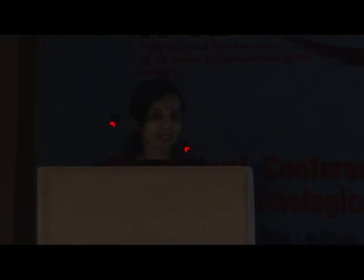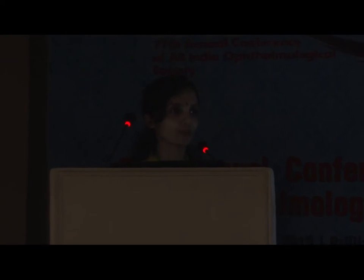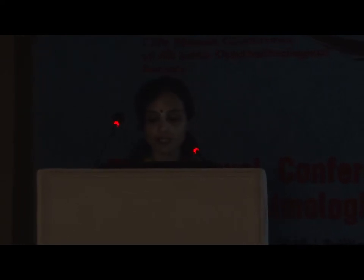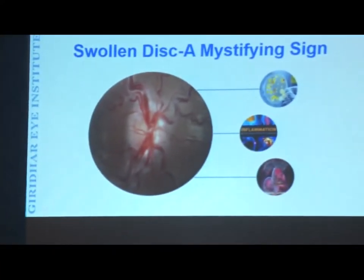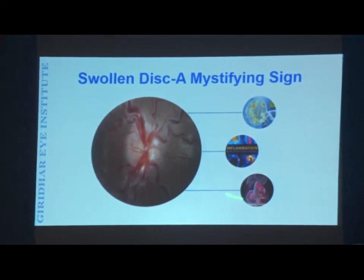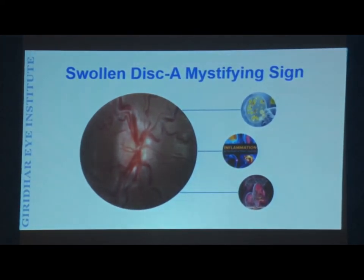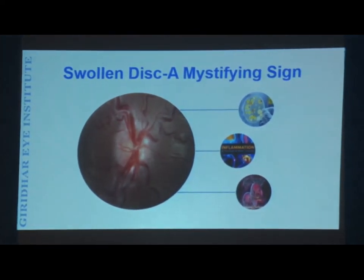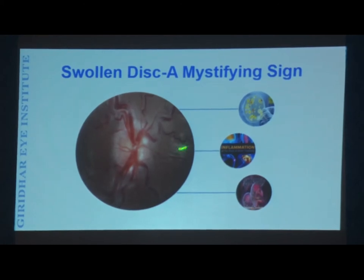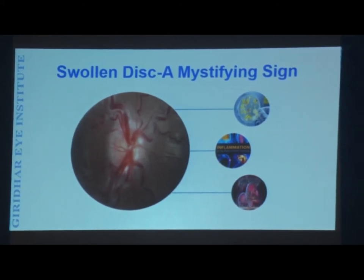Thank you AOC 2019 for this opportunity. We've all seen a swollen disc with normal vision, so let's see what are the causes of swollen optic disc with blurred vision. When you see an optic nerve head like this, it's a mystifying sign especially if there is defective vision. The causes range from infections to inflammations to malignancy.